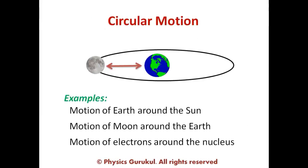So circular motion: when an object moves in a circular path, the motion is said to be circular. Examples include the earth moving around the sun in a circular path, the motion of the moon around the earth, and the motion of electrons around the nucleus — all these are examples of circular motion.